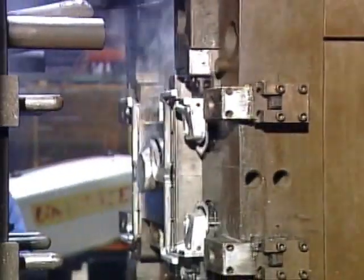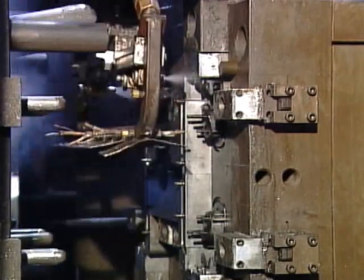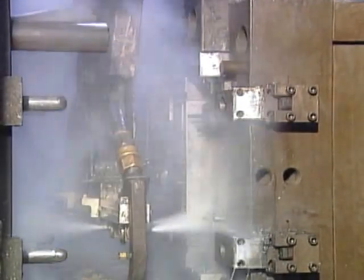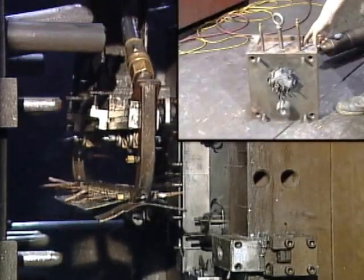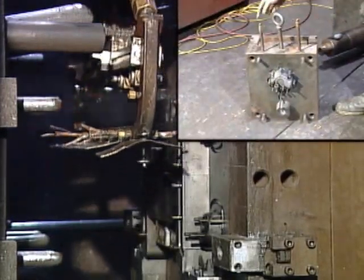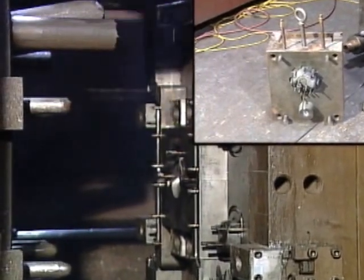The reciprocator's primary function is to apply a release agent. Sometimes it is necessary for the reciprocator to provide external cooling to the die as well. This increases the amount of time the reciprocator must spend between the dies. Steps should be taken to minimize the amount of external cooling needed, such as optimizing the internal die-cooling system.